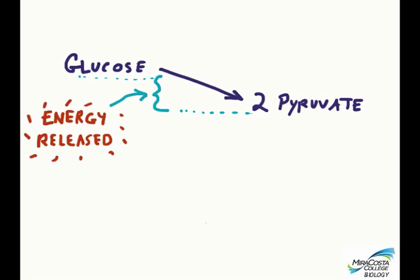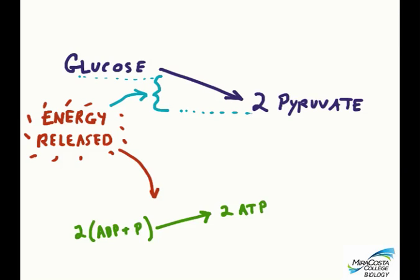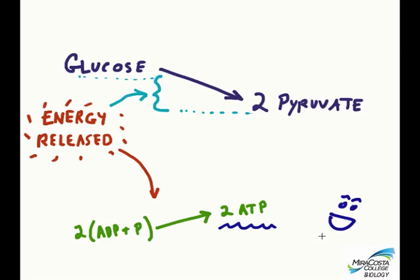Part of that energy will have been used to make the net yield of two molecules of ATP, which happens when we phosphorylate—that is, add phosphates to ADP. As far as glycolysis is concerned, this is basically all we're going to care about at this level of biology. If you really want more details about what happens to the glucose along the way to becoming two pyruvic acids, and where exactly ATP is generated, you can take a higher-level biology class for that.